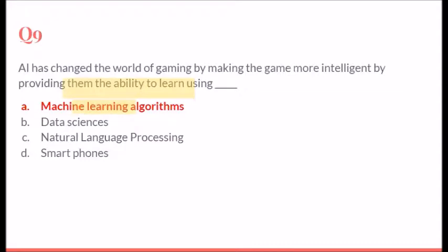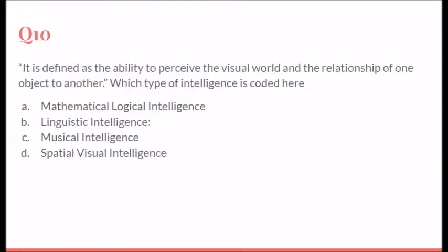The last question in the same row: It is defined as the ability to perceive the visual world and the relationship of one object to another. Which type of intelligence are we talking about? So we are talking about the last option.